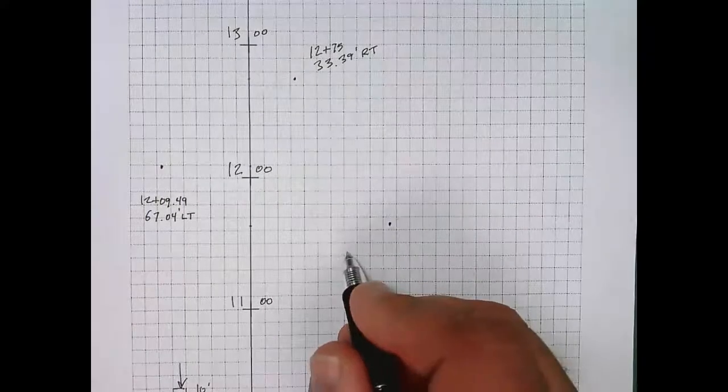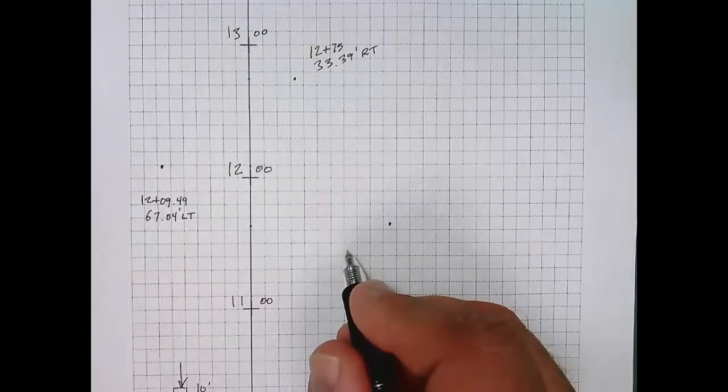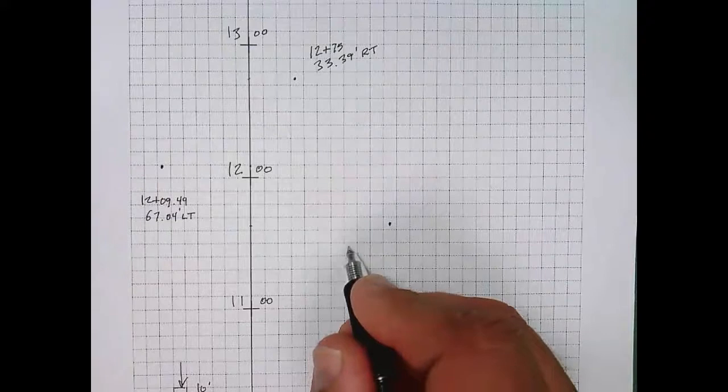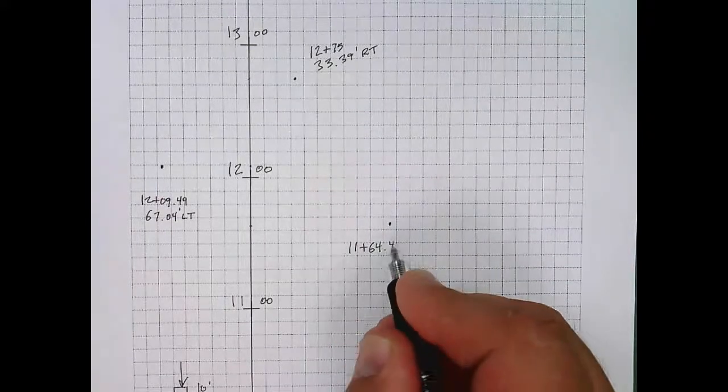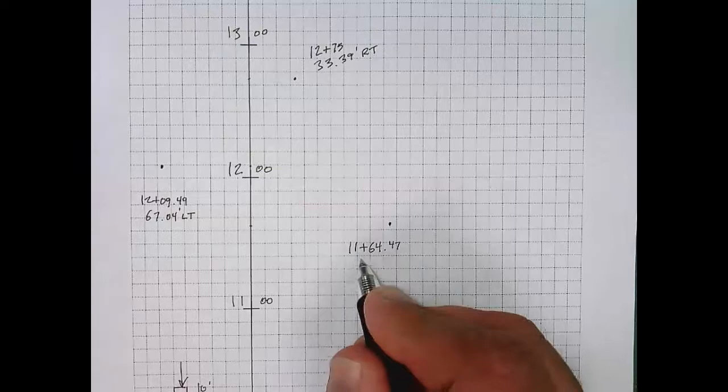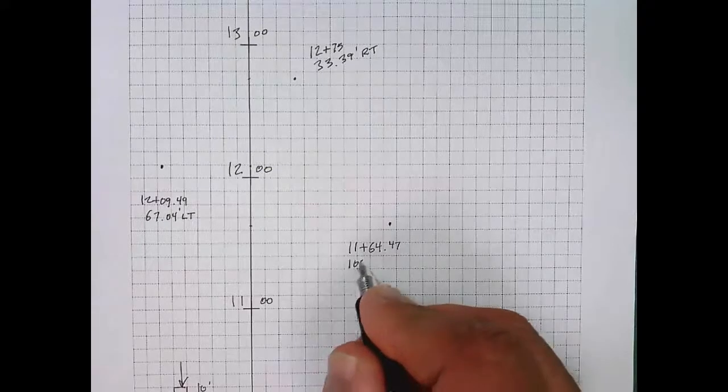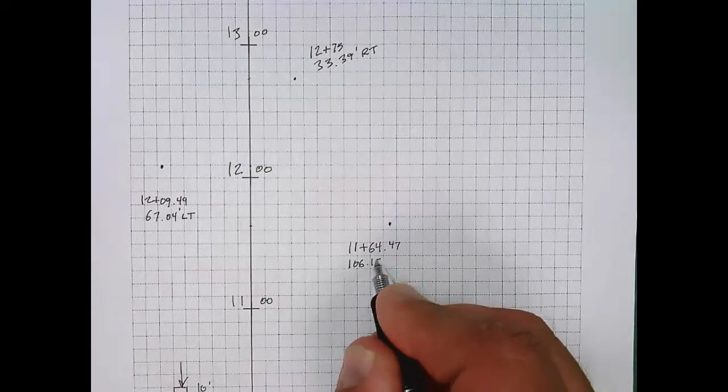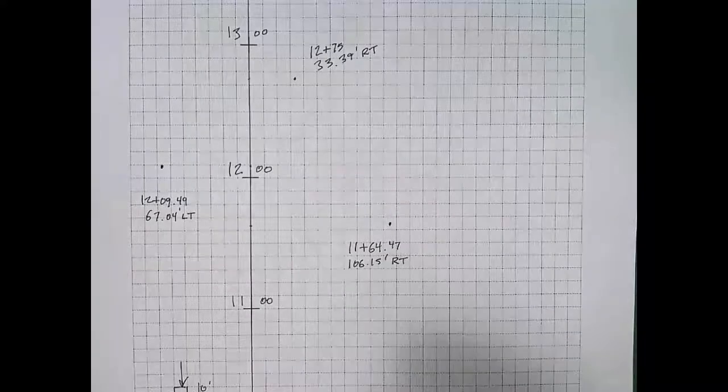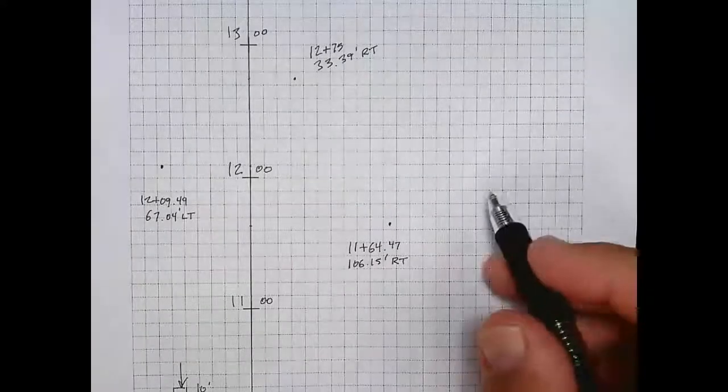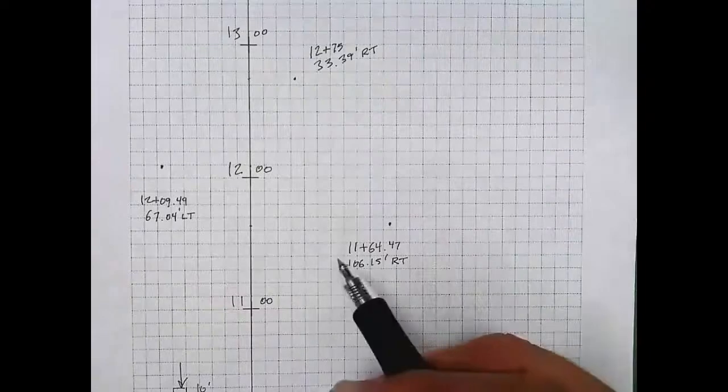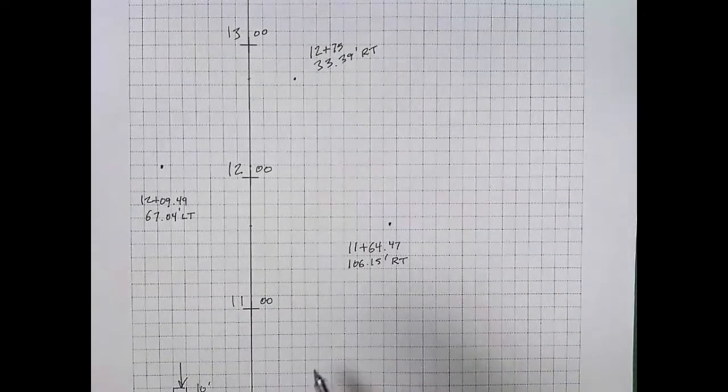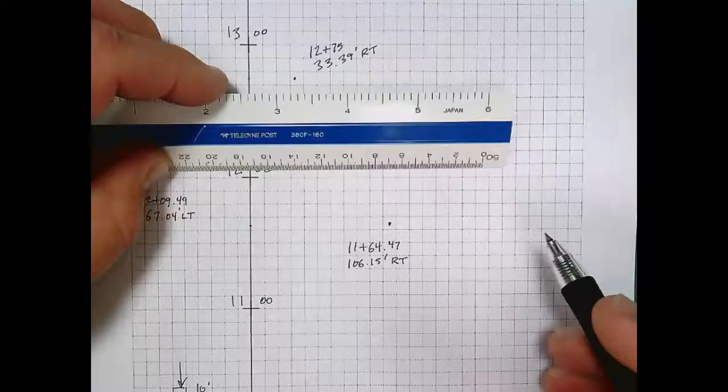Once I plot point four here, that starts to make sense. Line three to four is parallel to line one to two but it's shorter. So it appears that this is forming one leg of the L-shaped building. Point four has a station of 11 plus 64.47 feet with an offset right of 106.15 feet.